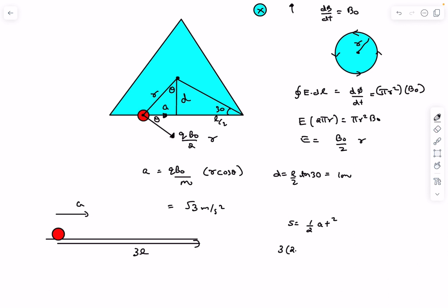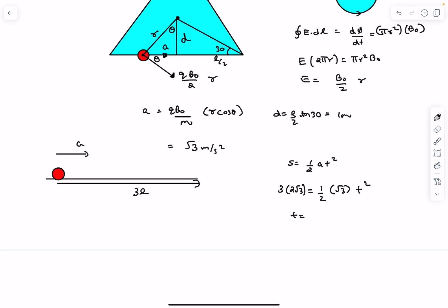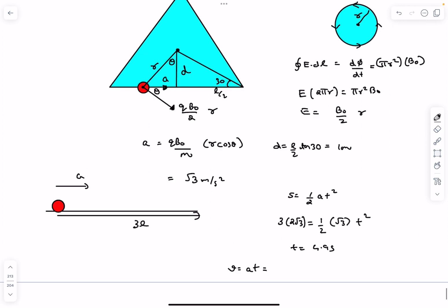So it is 3 times 2√3, and this would be equal to half times the acceleration times t². From here t comes out to be square root of 24, or 4.9 seconds. And the velocity is simply going to be a into t by kinematics, and this if you solve comes out to be 4.24 meters per second squared.